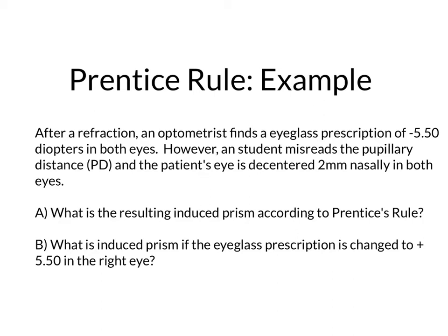To read the question: after refraction, an optometrist finds an eyeglass prescription of minus 5.50 diopters in both eyes. However, a student misreads the pupillary distance (PD) and the patient's eye is decentered 2 millimeters nasally in both eyes.